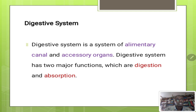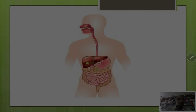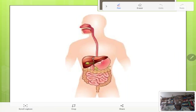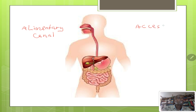This diagram shows us the main organs of the digestive system. The system contains two main parts: number one, the alimentary canal, and number two, the accessory organs.